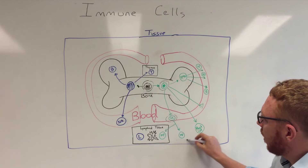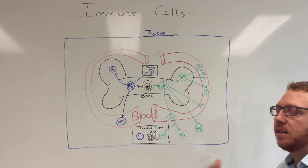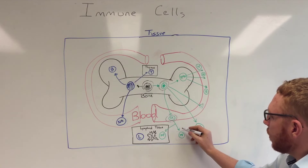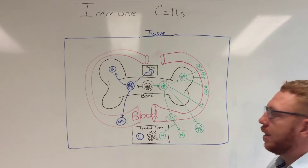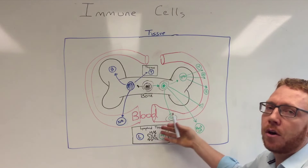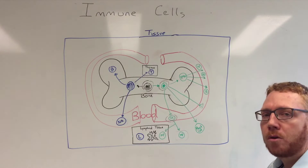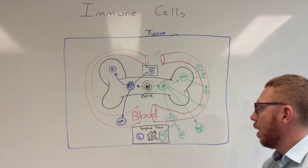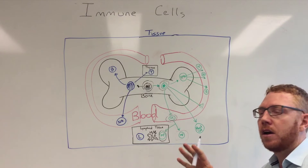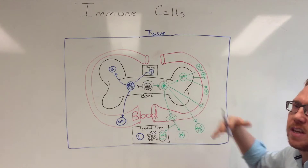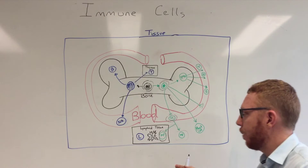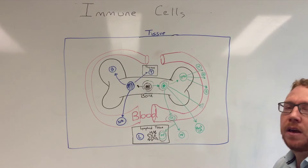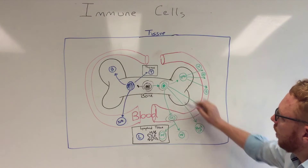These tissue-resident macrophages play an important role in digesting and eating things that aren't supposed to be in that tissue, such as bacterial or disease cells. Some macrophages will move into lymphoid tissue such as the spleen or lymph nodes, where they partake not only in phagocytosis but also become antigen presenting cells. I will go into depth on each one of these cell types in separate videos, so this is more of a broad overview. That's one lineage from the myeloid line.